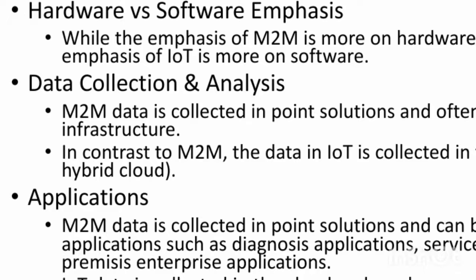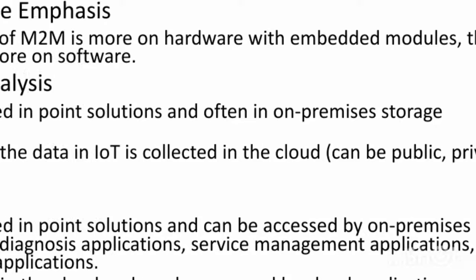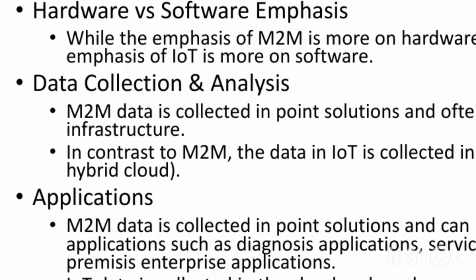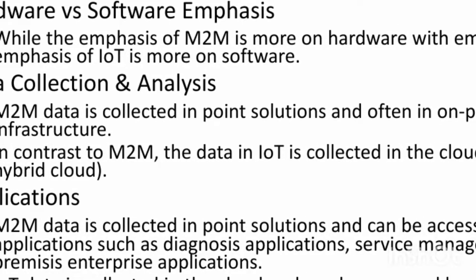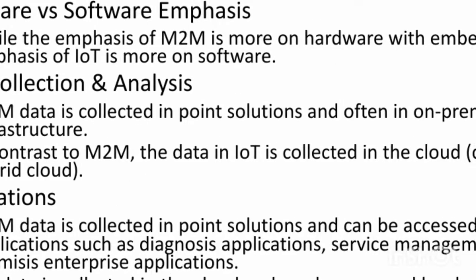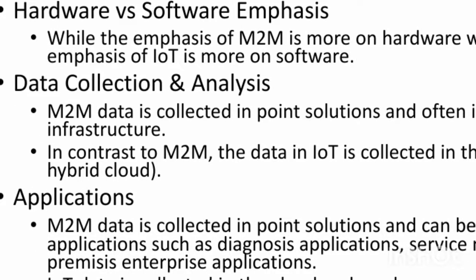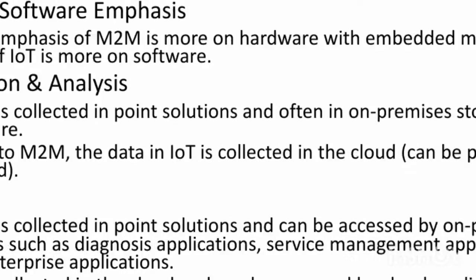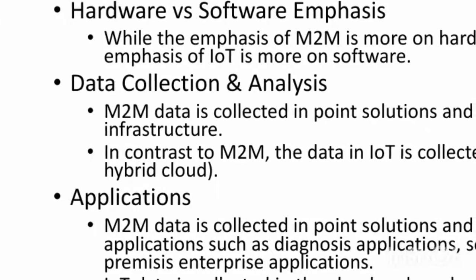In contrast to M2M, data in IoT is collected in the cloud — which can be public, private, or hybrid. M2M data can be accessed by on-premises applications such as diagnosis applications, service management applications, and enterprise applications. IoT data is collected in the cloud and accessed by cloud applications such as analytics, enterprise applications, and remote diagnosis and management applications.